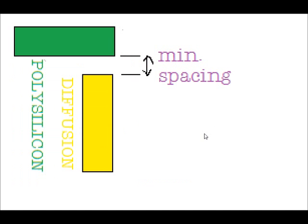In another instance where the minimum spacing rule is violated, this example shows two polygons of different layers. Here you have a diffusion and here you have a polysilicon. As shown in this diagram, these two polygons are correctly separated by the correct spacing.